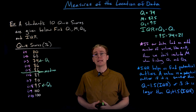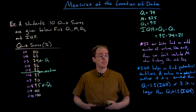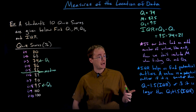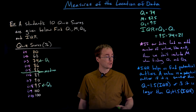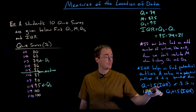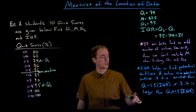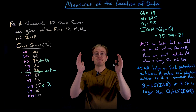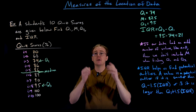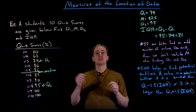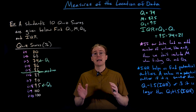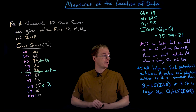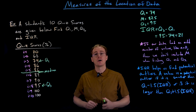Another important application of the IQR is that it helps us identify potential outliers within our data set. A value is a potential outlier if it is smaller than Q1 minus 1.5 times the IQR, or larger than Q3 plus 1.5 times the IQR. The IQR captures that middle 50%, while an outlier is an extreme value far outside the center of our data set.